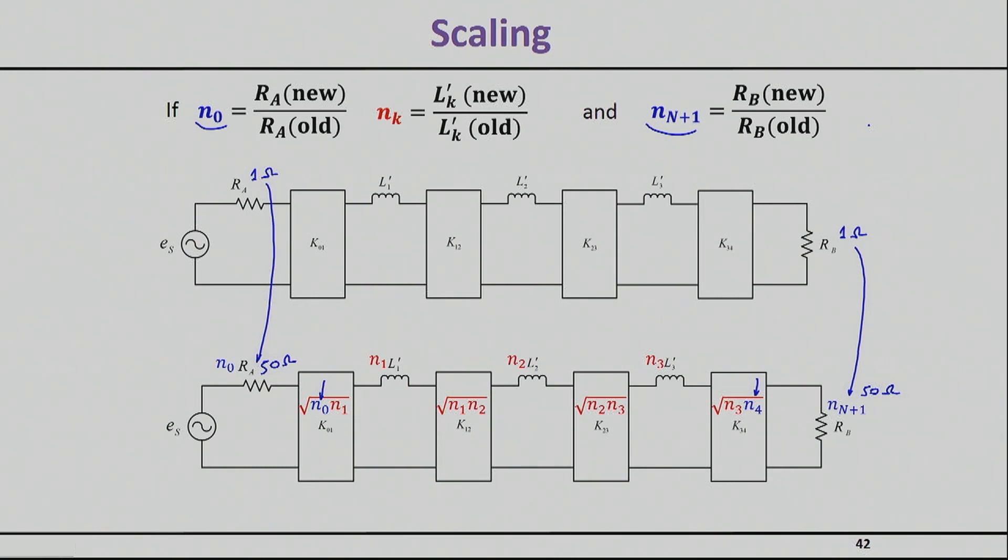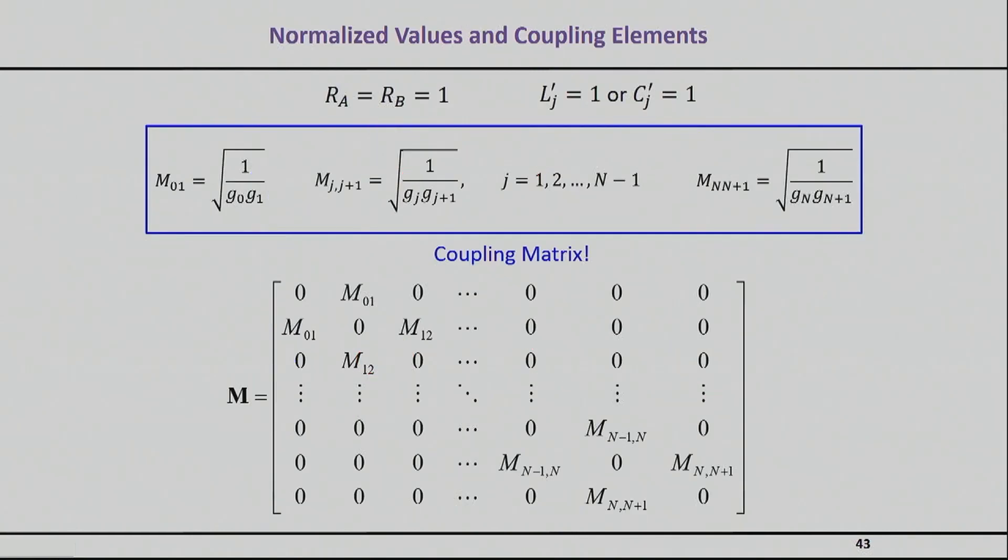You might choose different elements. For example, you designed your filter with L1 prime, L2 prime, L3 prime values, and suddenly you want to change these values. You can quickly choose a new value by multiplying with your scaling parameter. This scaling parameter doesn't work only for the beginning and end, it works for the intermediate coupling sections as well.